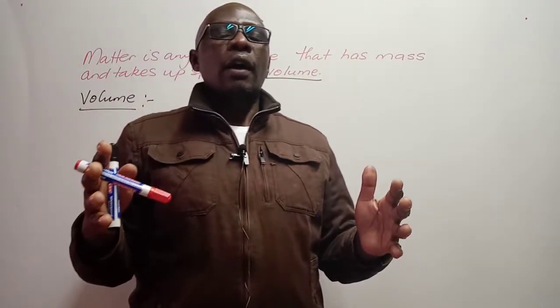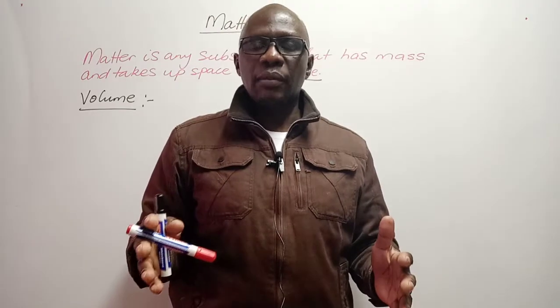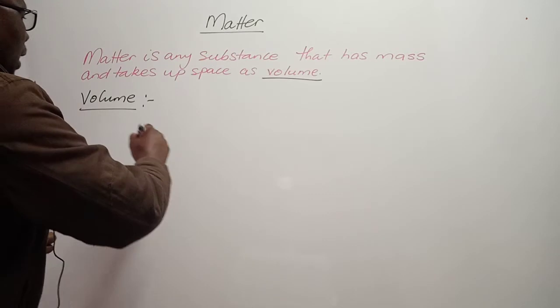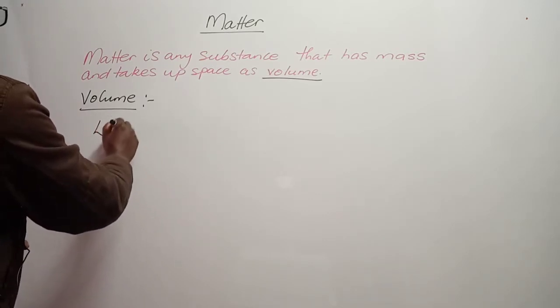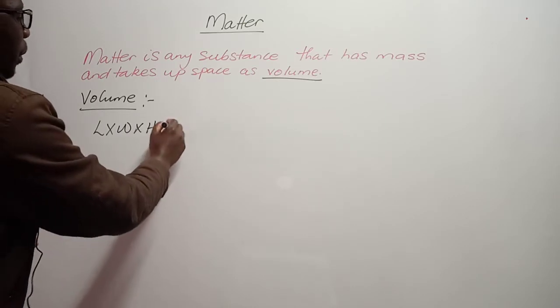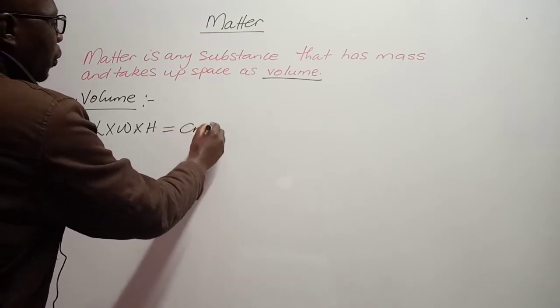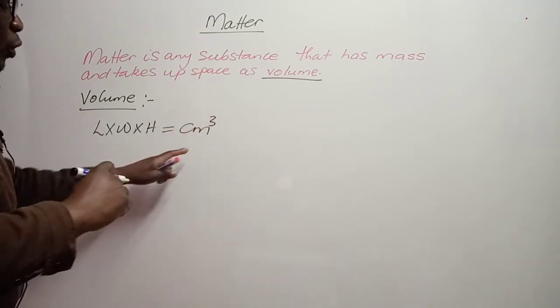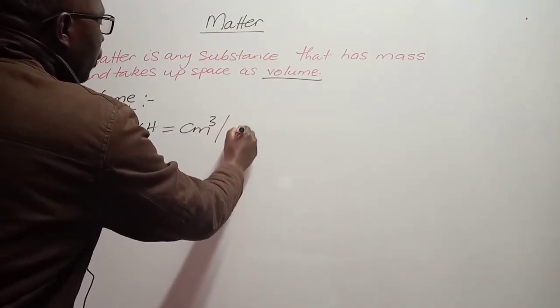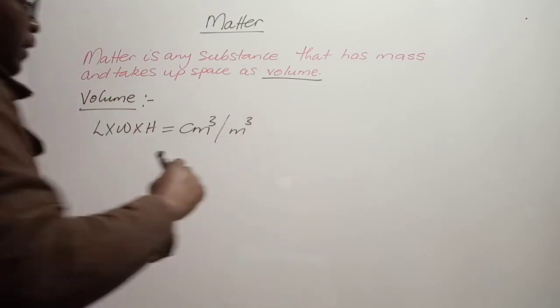Volume is three-dimensional. By volume being three-dimensional, it means it has got a length, a width, and a height. And because of this, the unit of measurement of volume will be cubic centimeters or cubic meters.